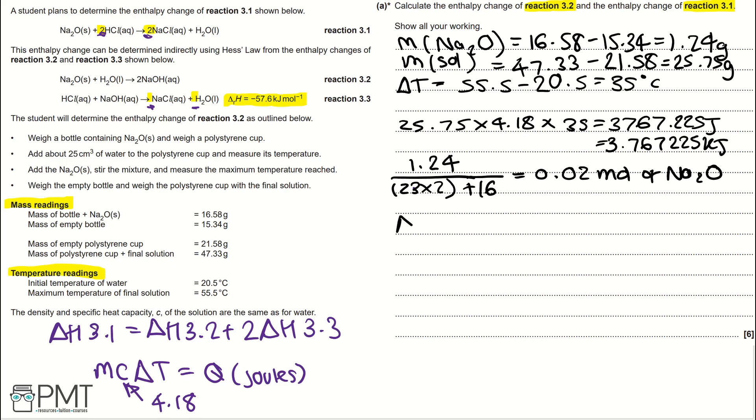So, we're working out the enthalpy change of reaction 3.2 here, and we do that by taking our kilojoules, 3.767225, and dividing it by our moles, 0.02, which gives us 188. We need to make sure we put a negative because this enthalpy change is exothermic, and then our units, kilojoules per mole.